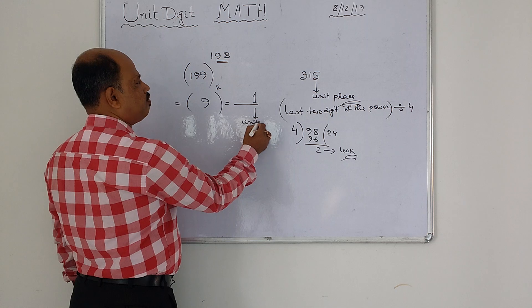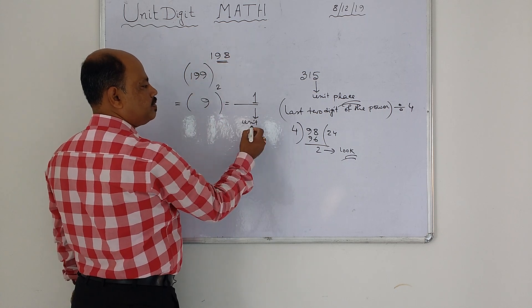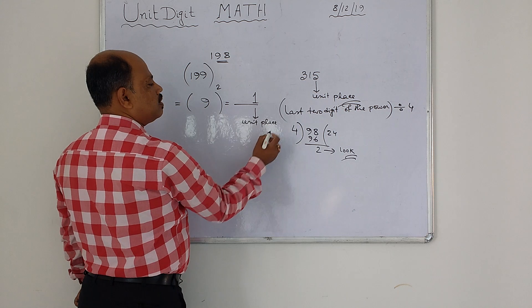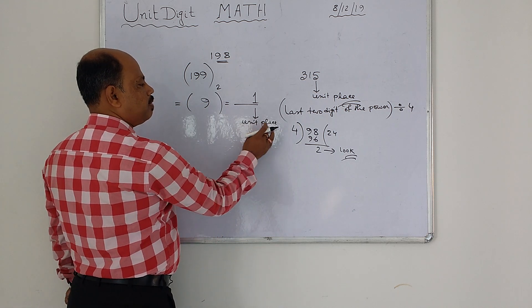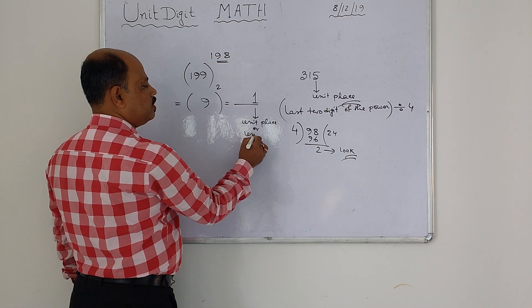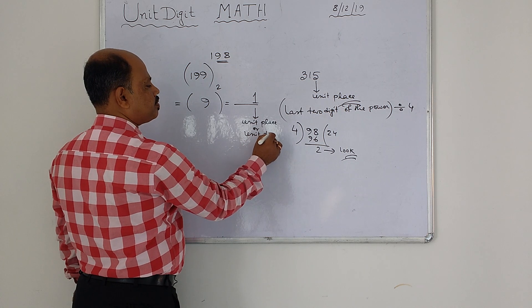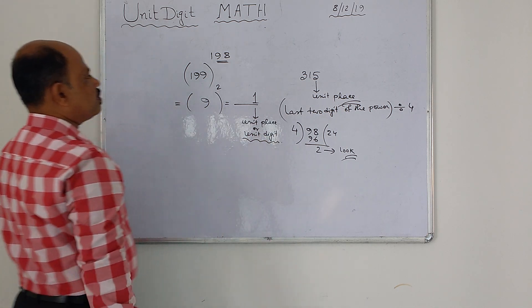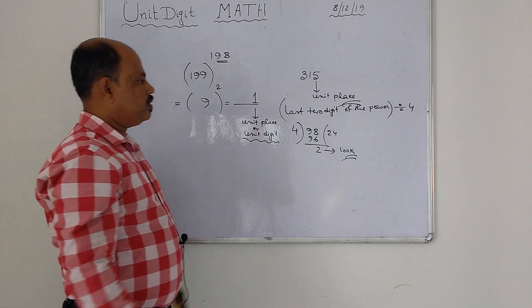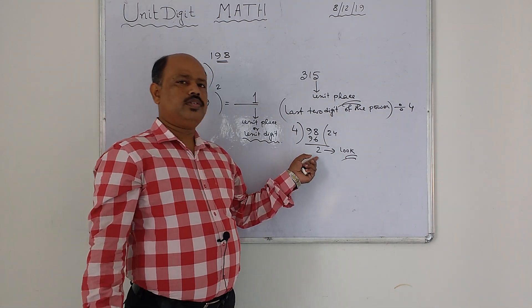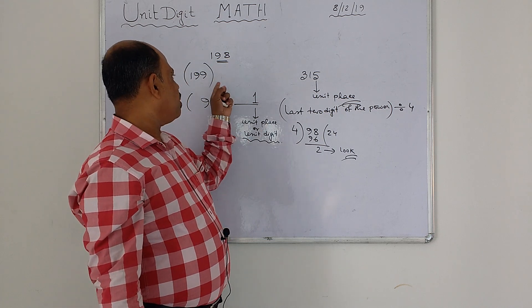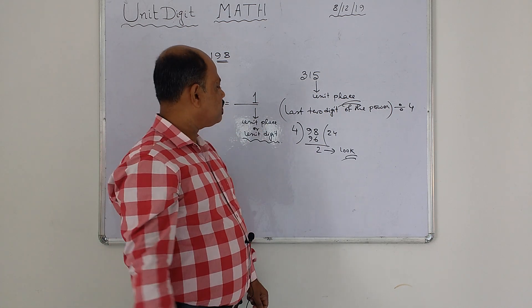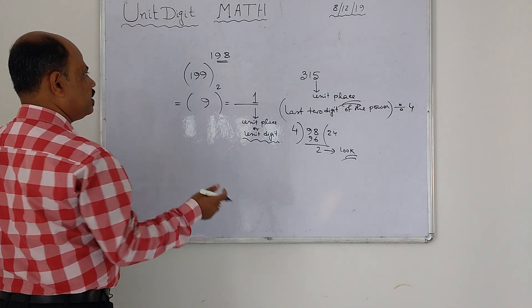So the answer — the unit digit of the number — is one. Now, there is a remainder, so you write that remainder as the power. But if there is no remainder, let's look at another example.